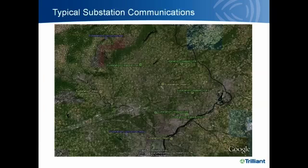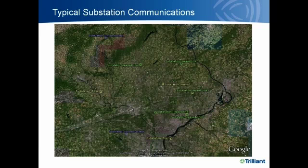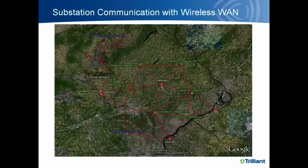Starting with substation communication — this slide represents an example deployment with a variety of different substations: some already connected with fiber and SCADA communications, some connected with lease lines that have SCADA shown in green, and then in purple, substations that simply don't have any communications. The ones in yellow already have fiber, green have lease lines, and purple have no communication.